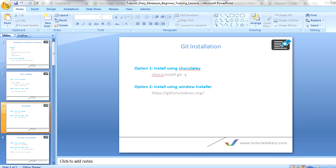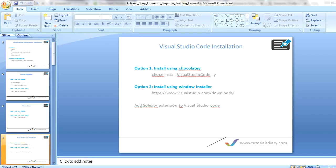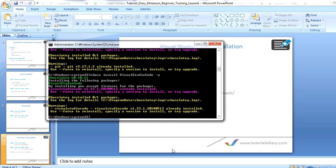With those steps you have successfully installed Node.js and Git. The third step is Visual Studio Code installation. You again have two options: the Choco command or the Windows installer. Run 'choco install vscode'. This is already installed on my system so it will skip, but for you it will download and install everything. Alternatively, you can go to the Visual Studio Code URL and download it for free.